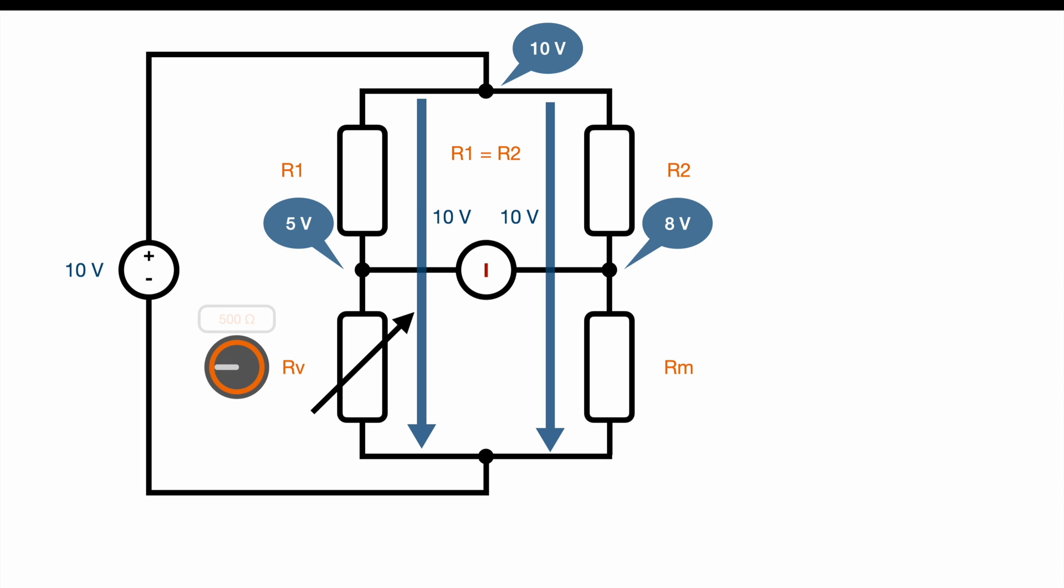Let's assume RV is 500 ohm, which leads to 5 volts on the left hand side and 8 volts on the right hand side. What we're going to do now is manipulate RV to equalize the difference of potential between left and right hand side.